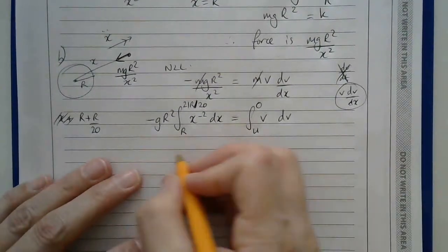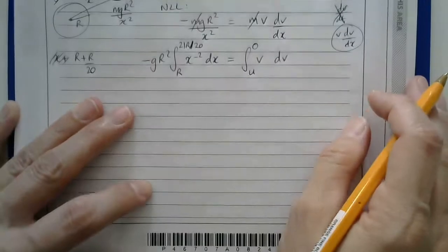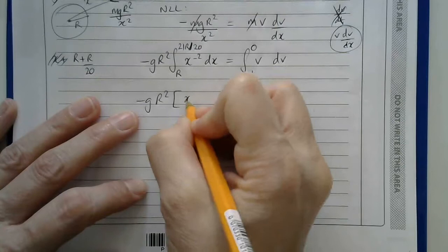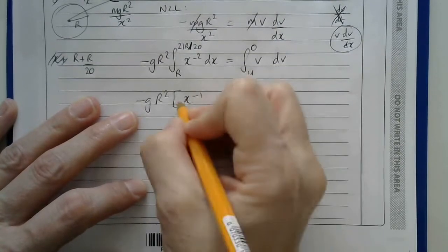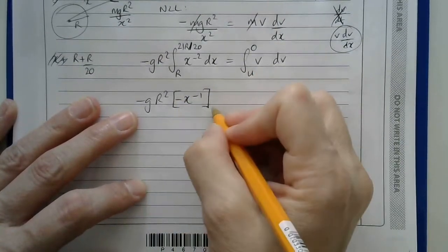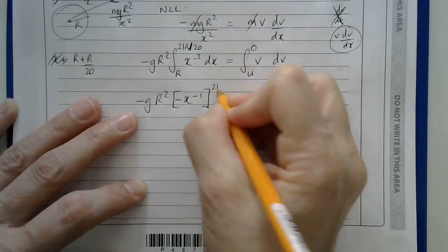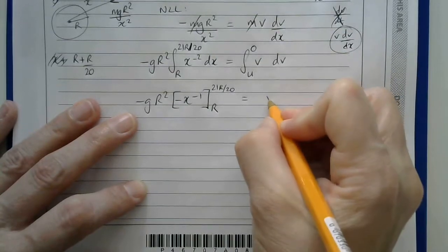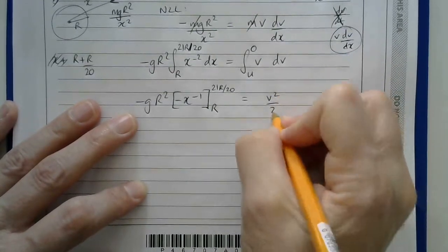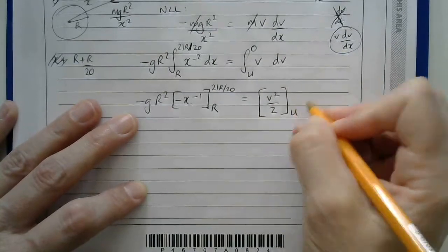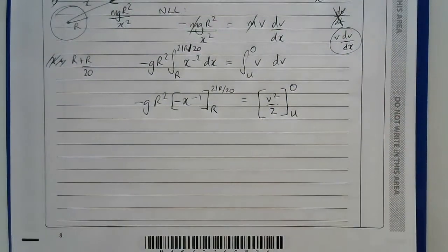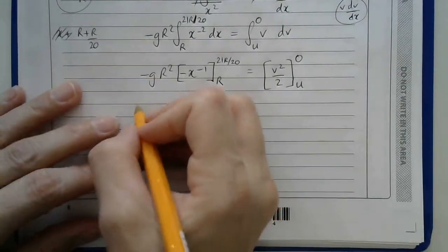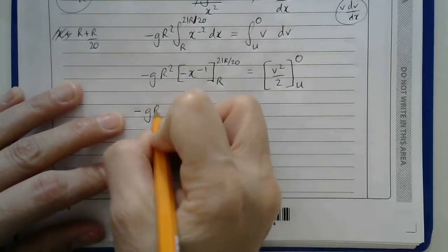So now I can do the integration. So on the left-hand side, I'll get negative gr squared. Here I get add 1 to the power, divide by new power, to evaluate from r to 21r over 20. And on this side, I end up with v squared over 2 to be evaluated from u up to 0.